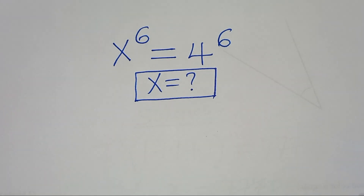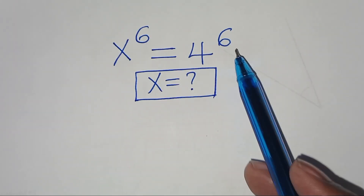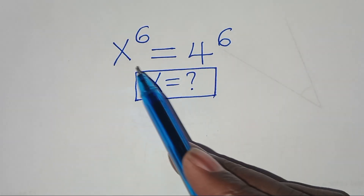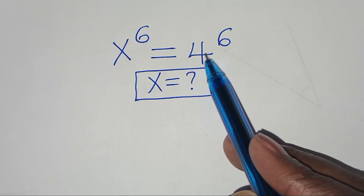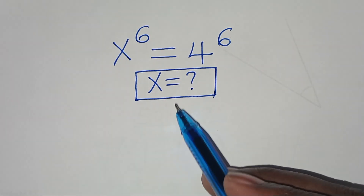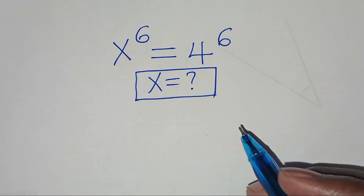Hello everyone, you're welcome to solve this nice exponential equation, which is x to the power 6, equals 4 to the power 6. What are the values of x?